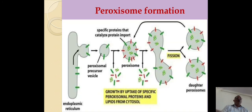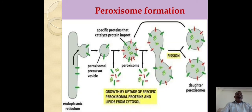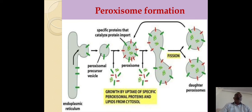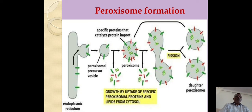How is it formed? You can see very clearly that it is originated from the endoplasmic reticulum. There are several small vesicles produced from the endoplasmic reticulum, and ultimately they divide into several daughter colony-like vesicles.